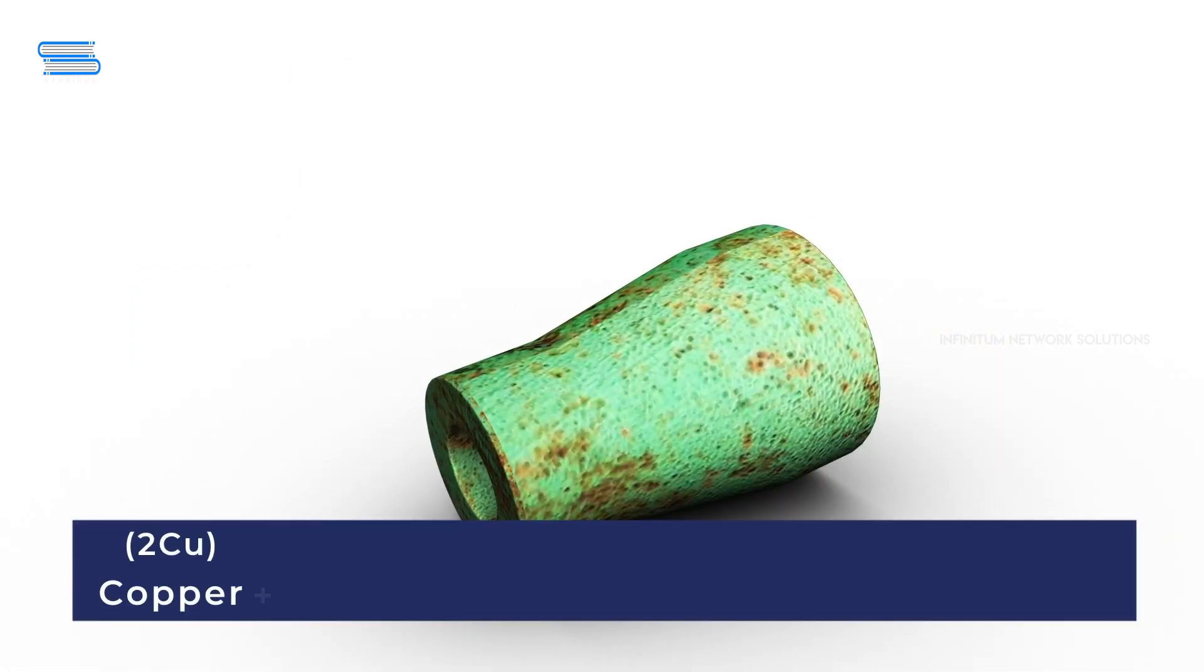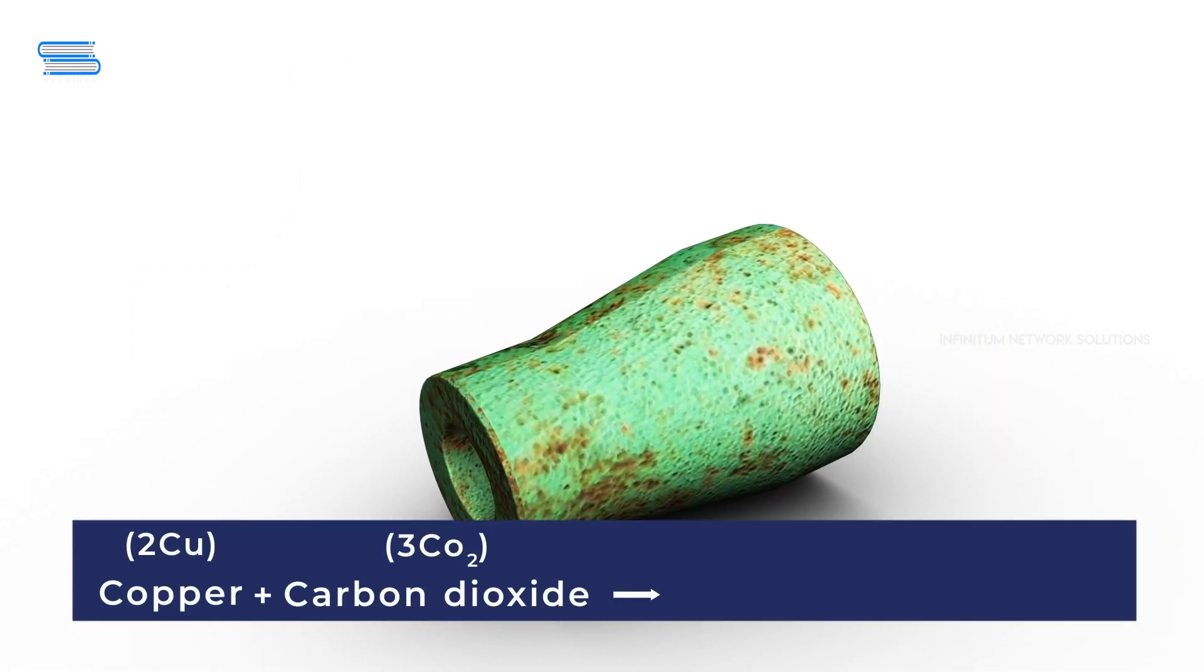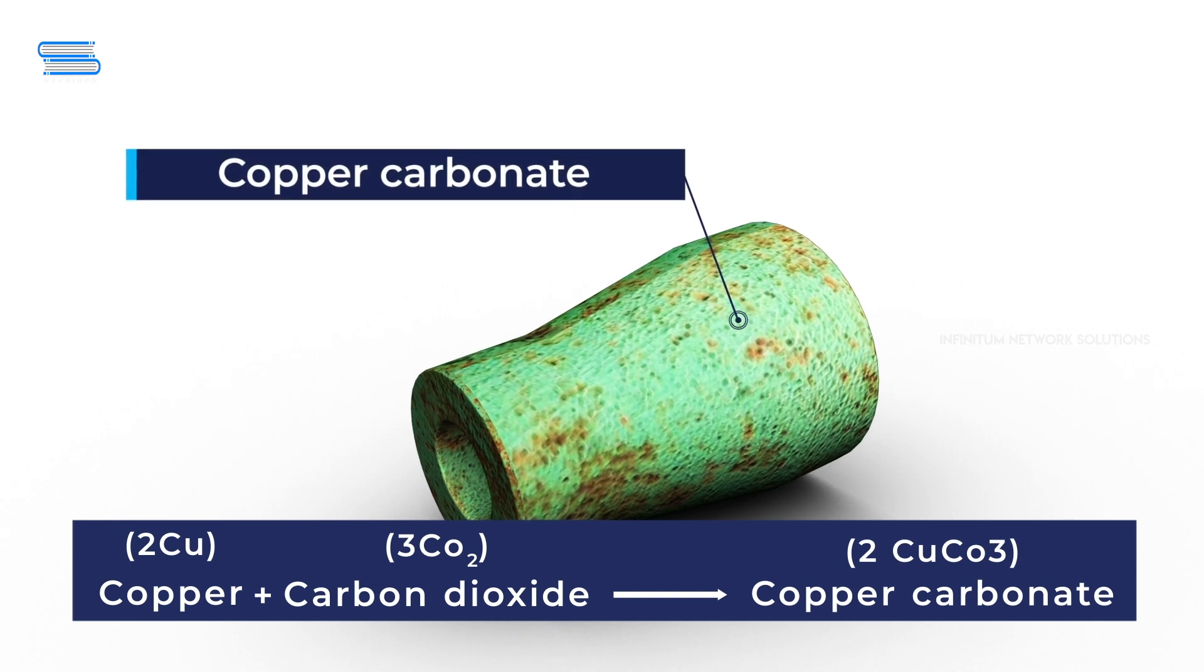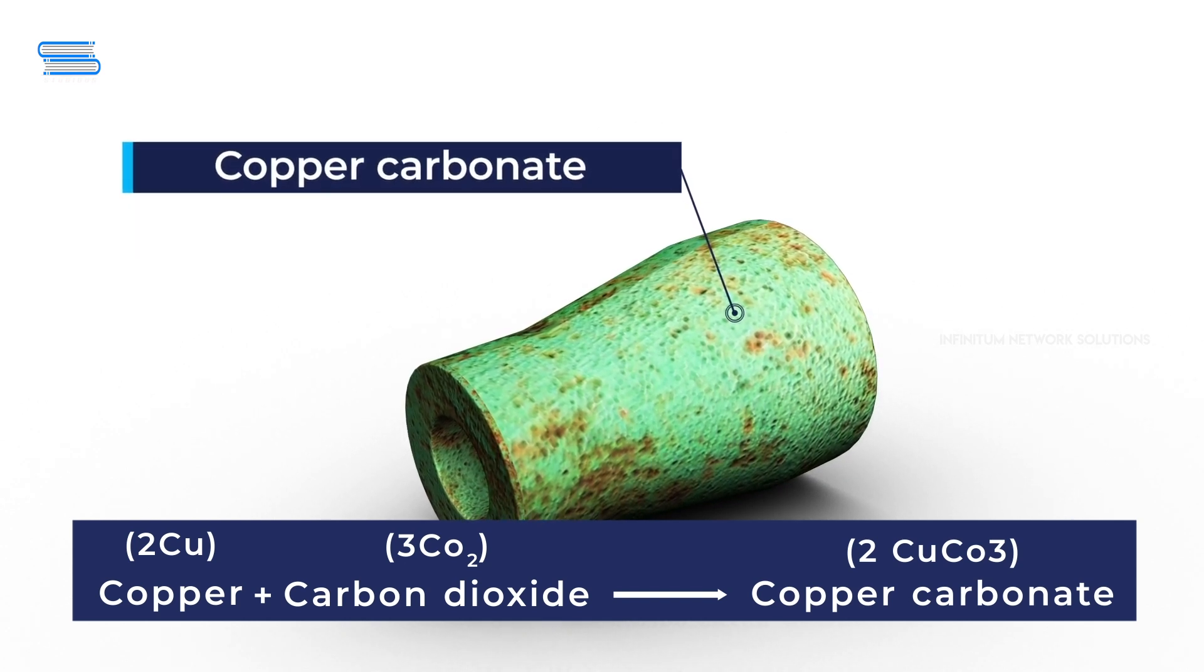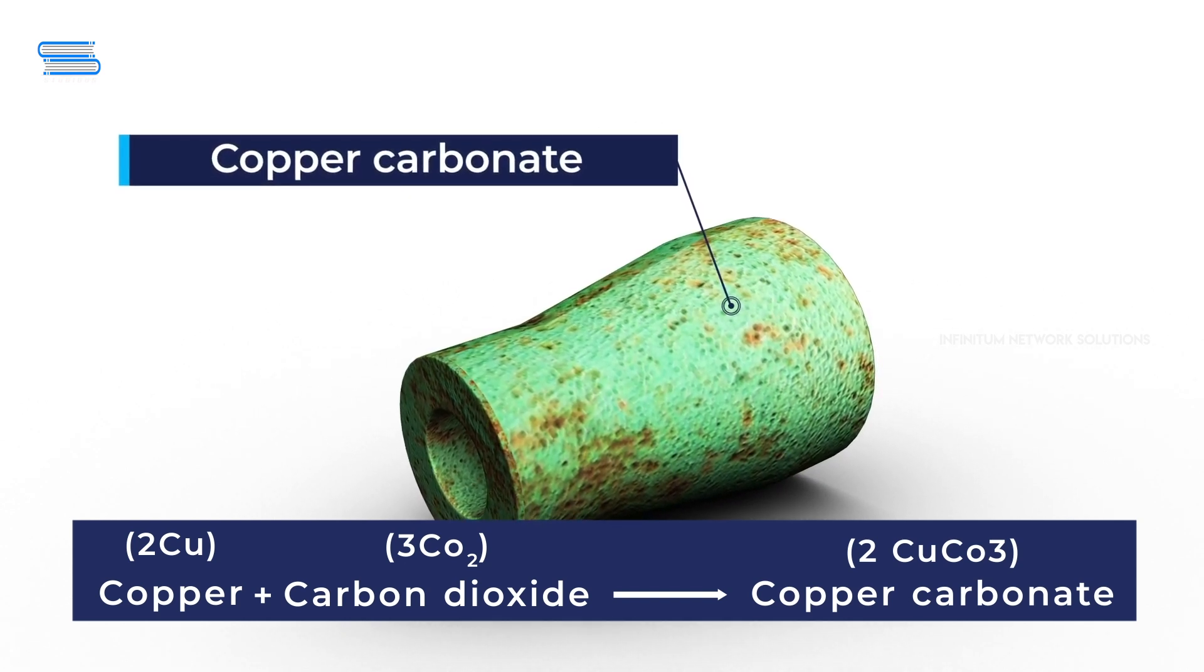The reaction of copper with moist carbon dioxide in the presence of air gives copper carbonate, which is a green coat formed on the copper substance when it loses its shiny brown surface.